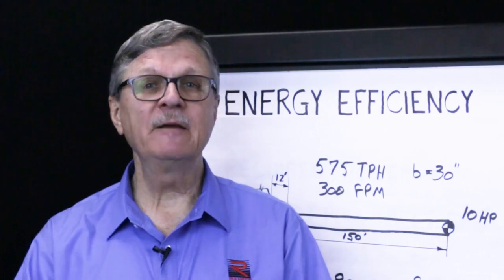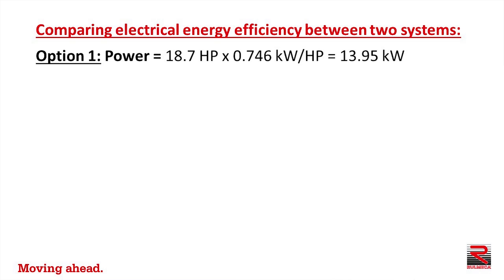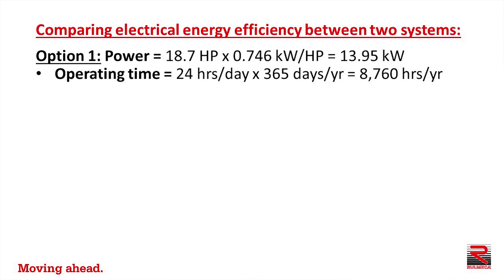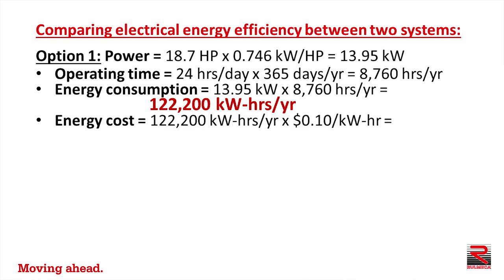Here is how to compare the efficiency of the two systems. Option one has a required power of 18.7 horsepower. We multiply that by 0.746 kilowatts per horsepower to get a power requirement of 13.95 kilowatts. With an operating time of 8,760 hours per year, we multiply kilowatts by operating hours and determine that the required energy consumption is 122,200 kilowatt hours per year. At an electrical utility charge of 10 cents per kilowatt hour, the power cost is $12,220 per year.